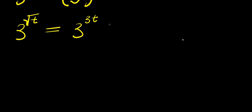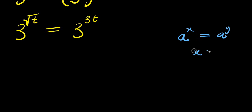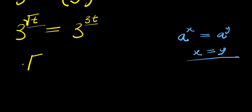Now, if you have a to the power of x equals a raised to the power of y, that means x equals y. So we apply that same identity here: square root of t equals 3t.